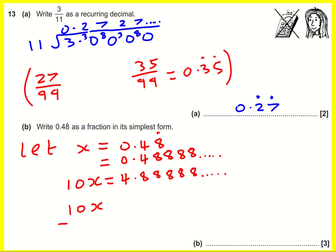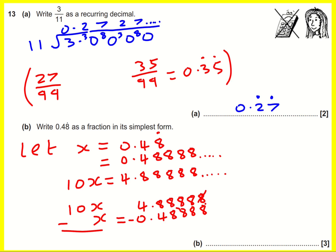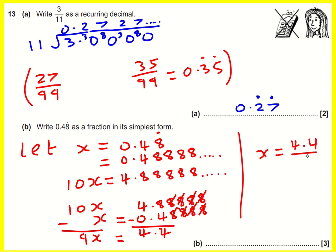Then we subtract: 10x minus x. We get 4.888... minus 0.488... — the recurring parts cancel out, which is why this approach works. We end up with 9x = 4.4, and therefore x equals 4.4 over 9.